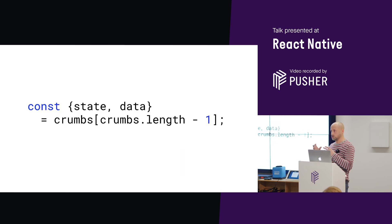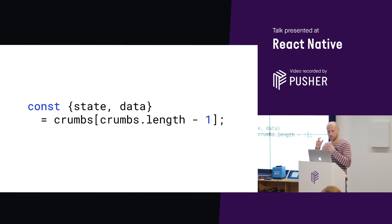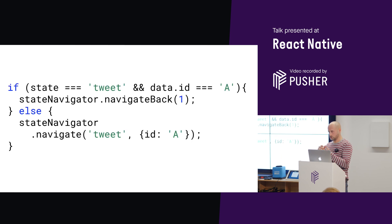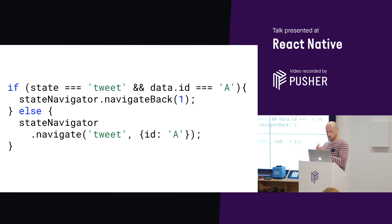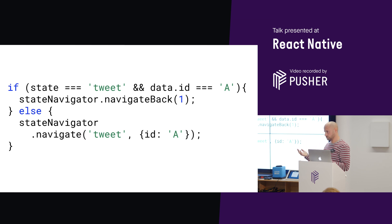We can do this using the crumbs array. When the user is on tweet B and re-selects tweet A, we check what the last crumb is — the last crumb is the previous scene. We check if the last crumb's state and data match tweet A. If the previous scene is already tweet A, then we navigate them back. If it isn't — for example if they got to tweet B from tweet C — then we navigate them forward to tweet A as normal.